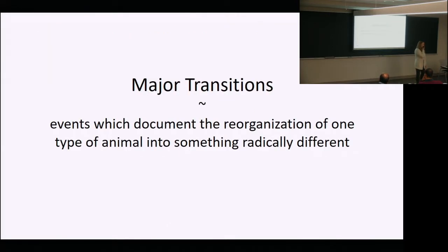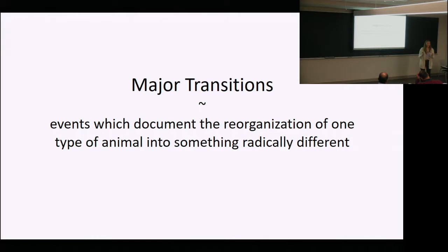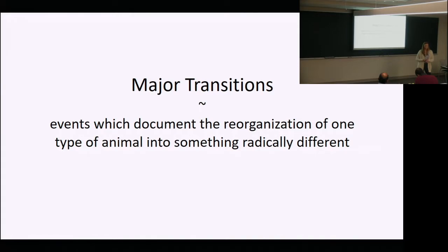A major transition can be defined as events which document the reorganization of one type of animal into something radically different. These are really exciting events in evolutionary history because they document the organization of major body plans. Along with that comes major transformations in form, which result in major transformations in function that will ultimately lead to animals adapting to new ways of life, usually resulting in some new ecological adaptation or ecological diversification.